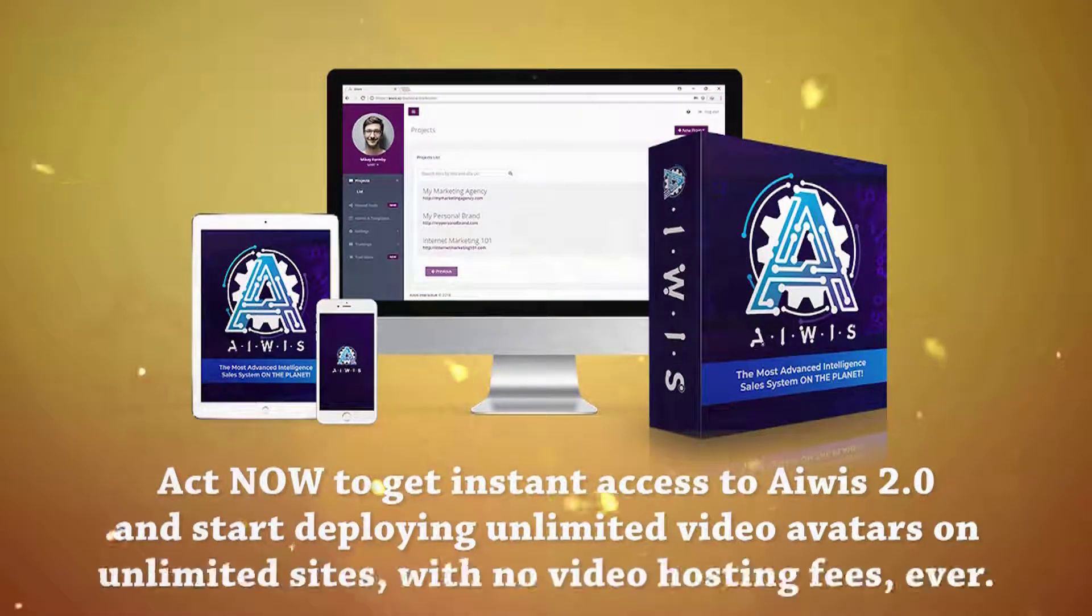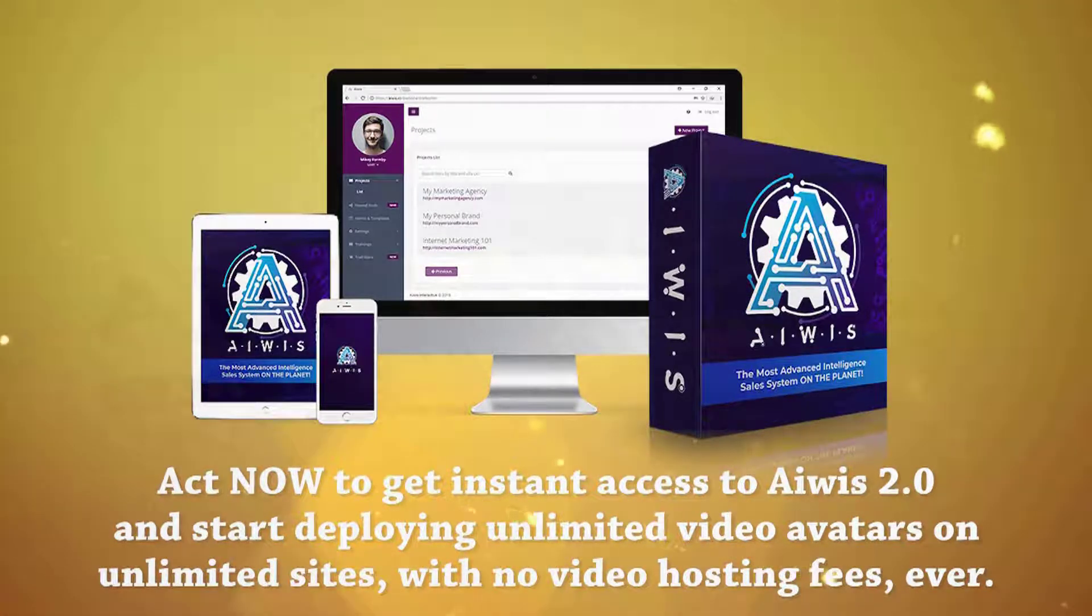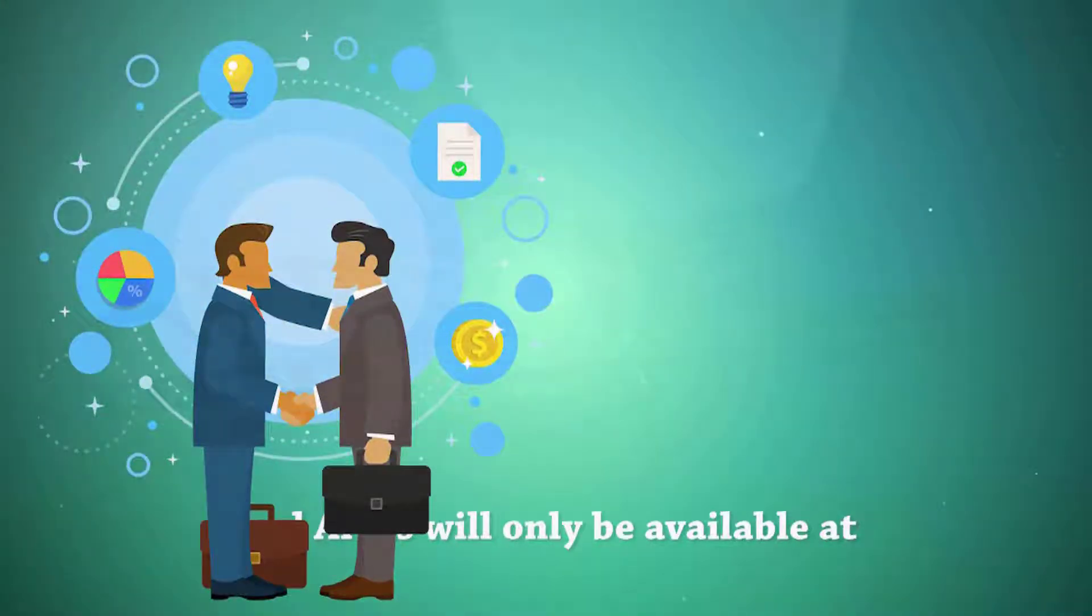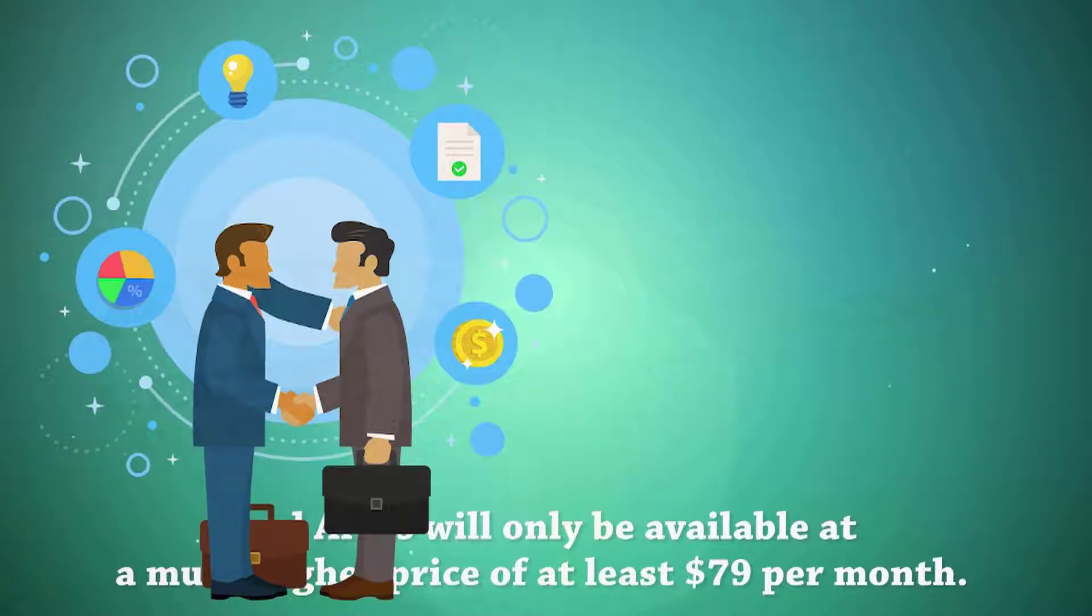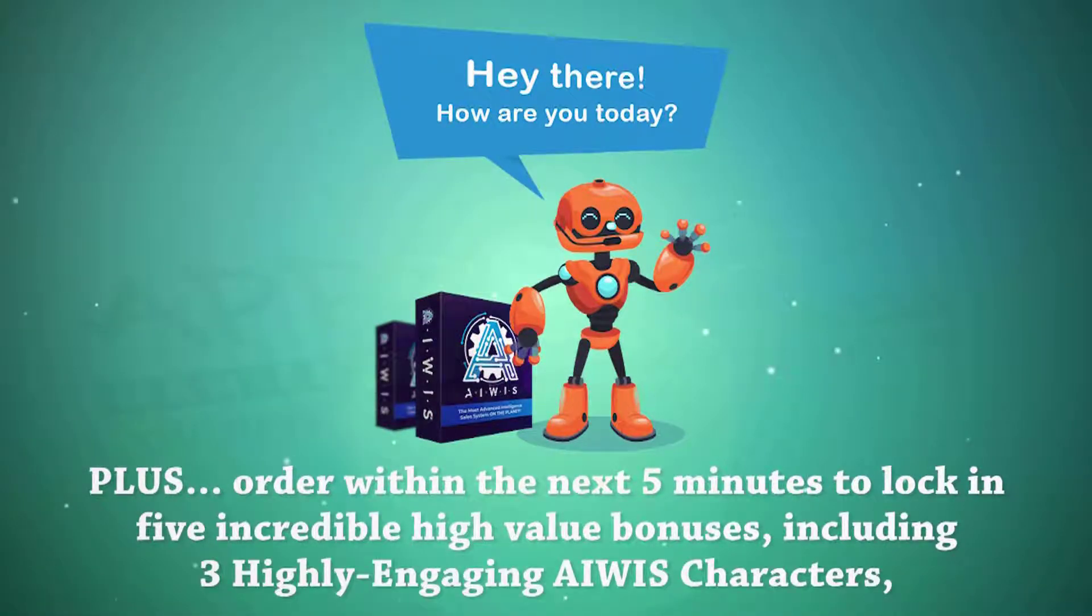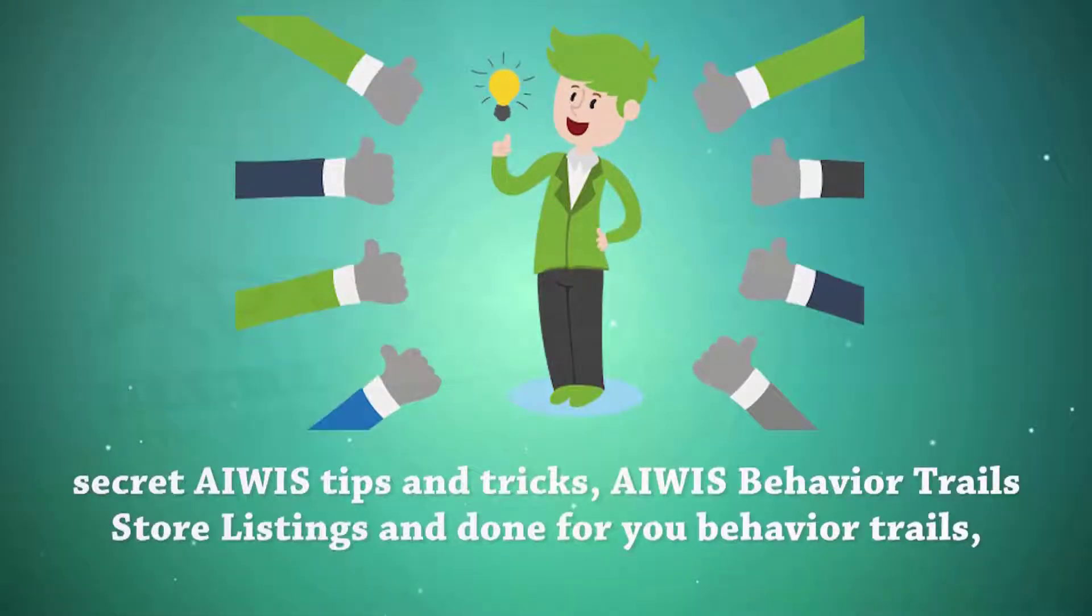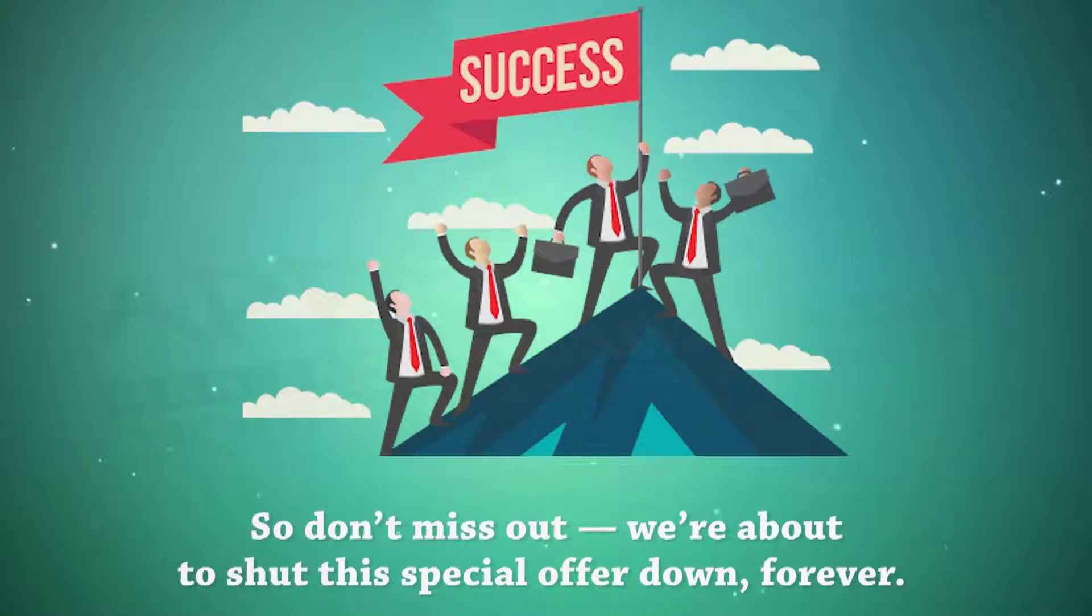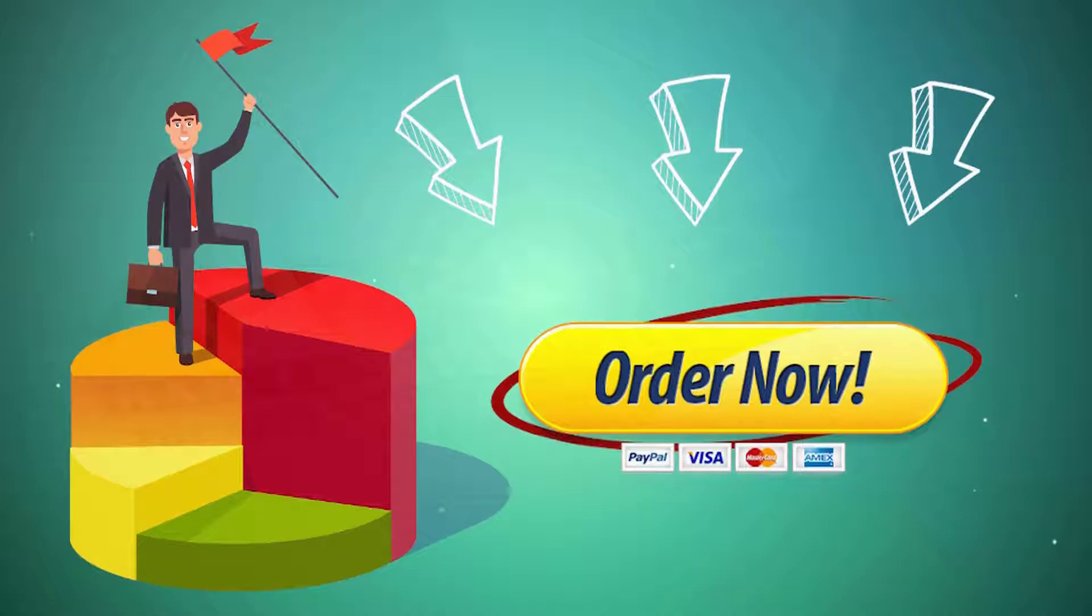Act now to get instant access to AWS 2.0 and start deploying unlimited video avatars on unlimited sites with no video hosting fees ever. But please remember, this price is only available during the introductory period. After this period, this discount will end forever. And AWS will only be available at a much higher price of at least $79 per month. Plus, order within the next five minutes to lock in five incredible high-value bonuses, including three highly engaging AWS characters, secret AWS tips and tricks, AWS behavior trails store listings and done-for-you behavior trails, all free when you purchase AWS today. So don't miss out. We're about to shut this special offer down, forever. Hit the order button below to secure your license to AWS 2.0 and get ready to set your opt-ins, leads, and sales on fire.